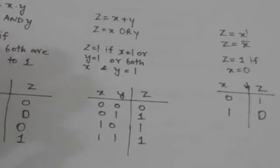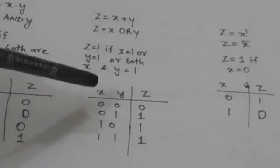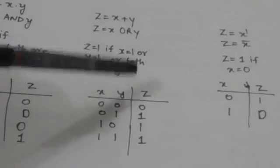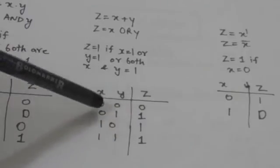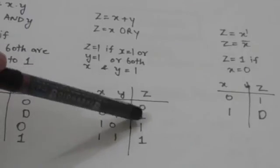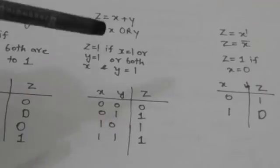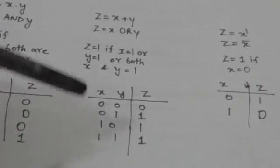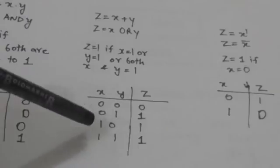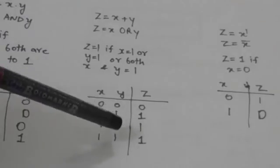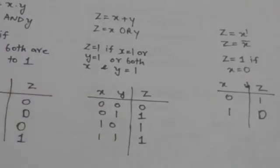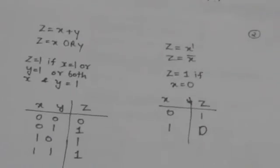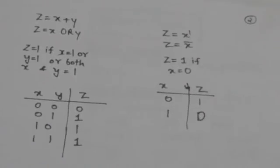The truth table for OR operation: when the value of x and y is both 0, the value of z is 0. When x is 0 and y is 1, the value of z is 1. When x is 1, the value of z is 1. When both x and y are 1, the value of z is also 1.